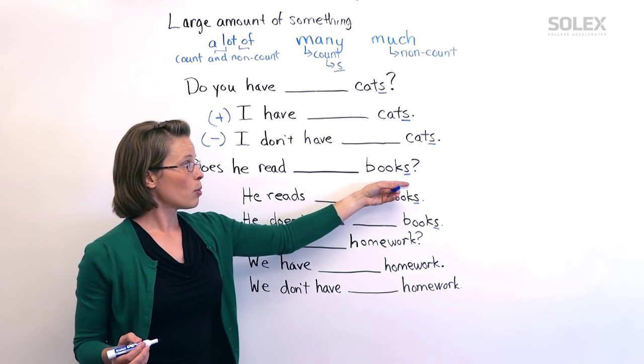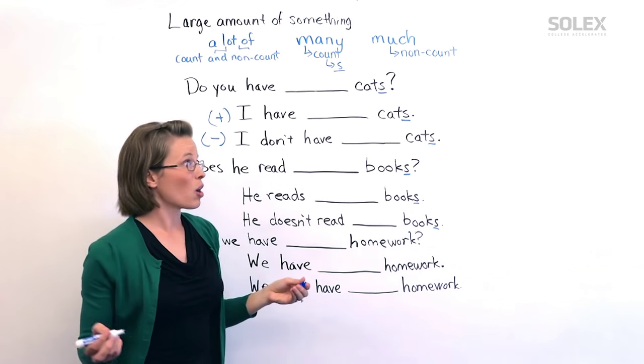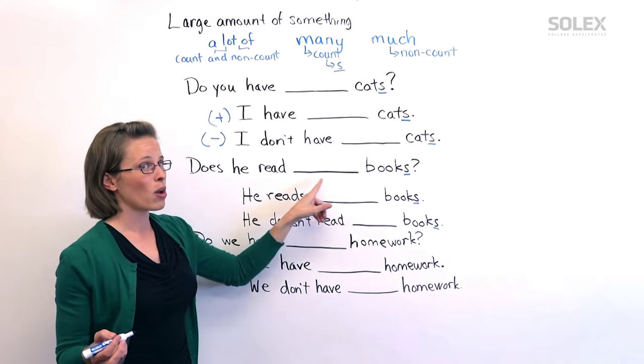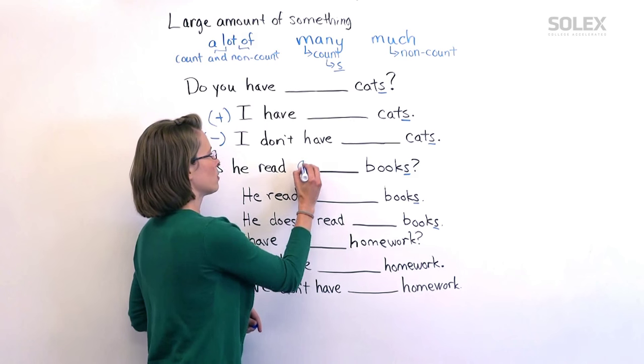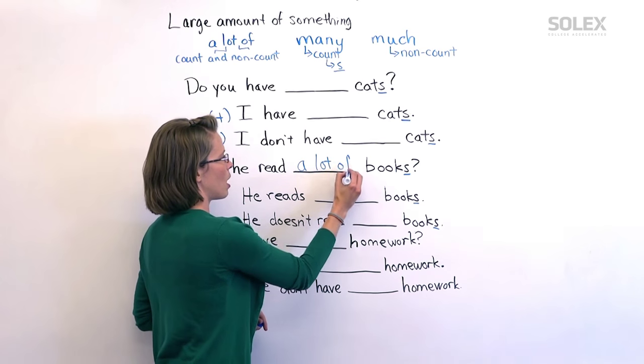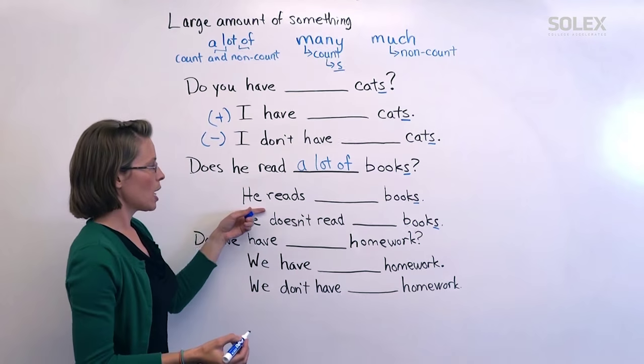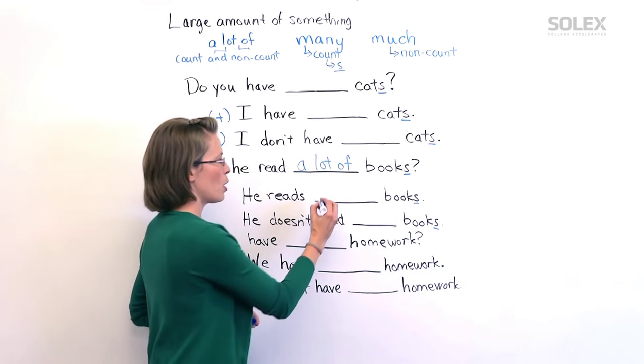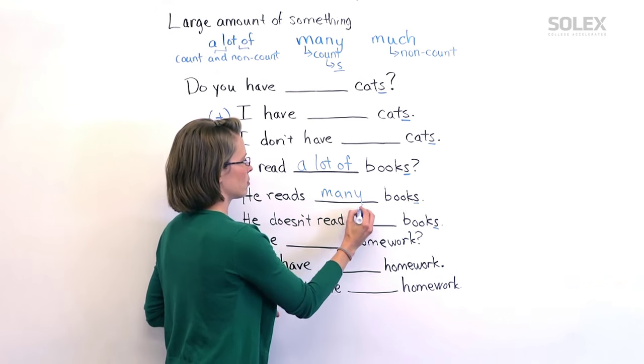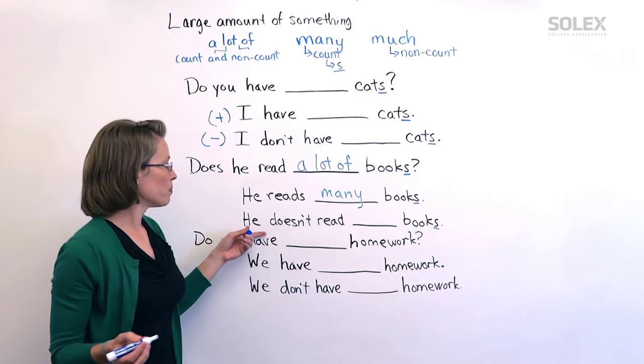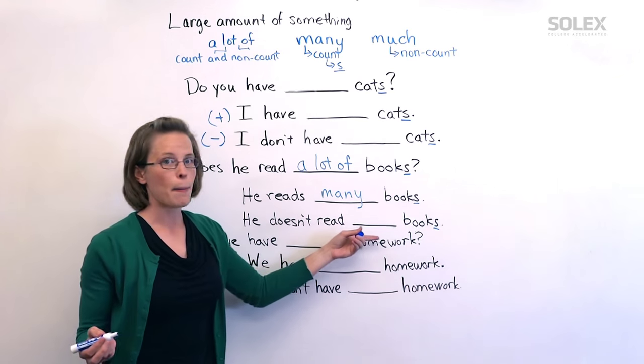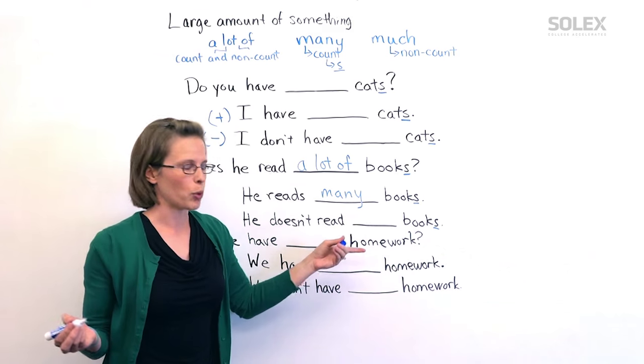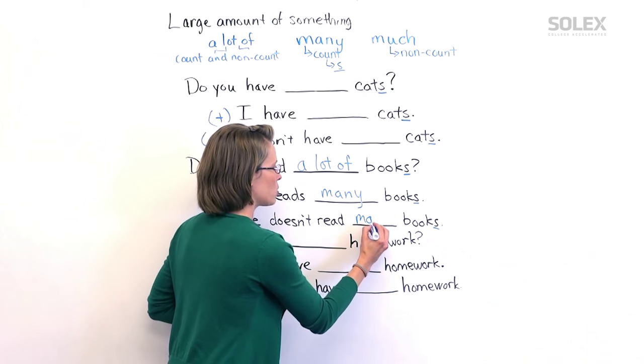As I said, because books is also a countable noun, then we can put a lot or many. A lot of books? Good question. He reads a lot of books. Or, he reads many books. Same thing. He doesn't read many books. Or, he doesn't read a lot of books. Either one is just fine.